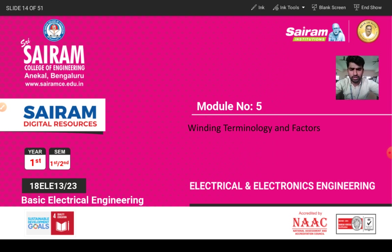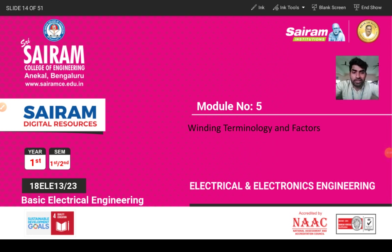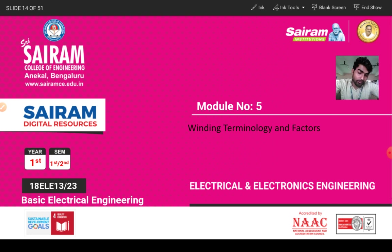Winding factors are used to reduce or balance the induced output voltage. The winding design involves distributed winding using the pitch factor and distribution factor. The pitch factor kp equals cos(α/2), and the distribution factor kd equals sin(mβ/2) divided by m·sin(β/2). Let's now go through the winding terminologies one by one.